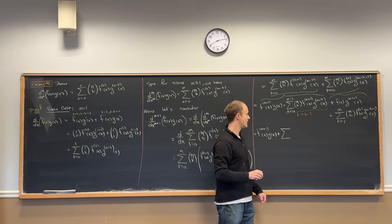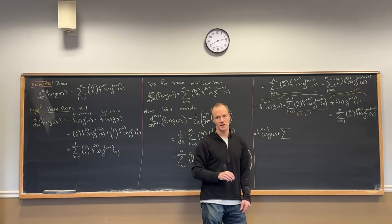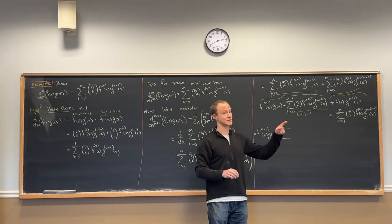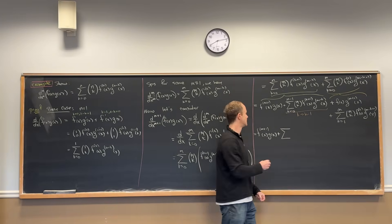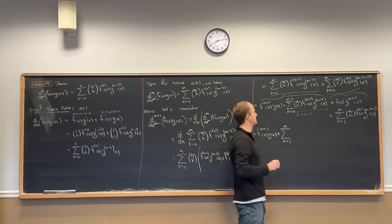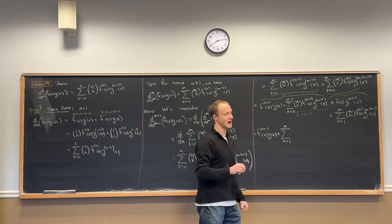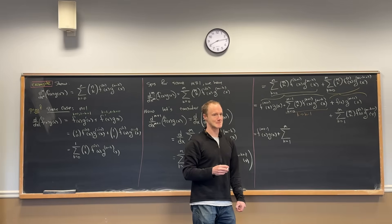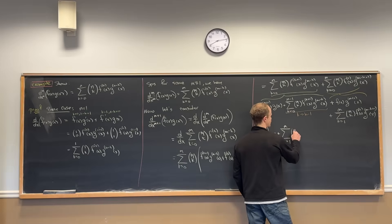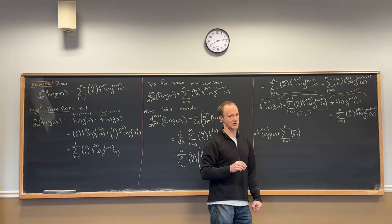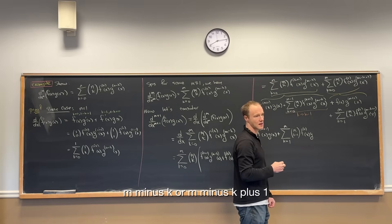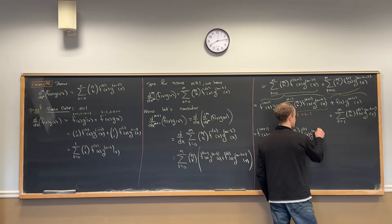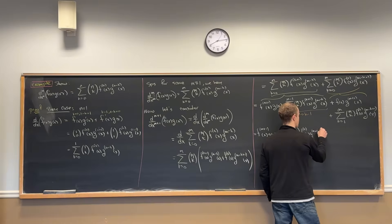Notice that if I replace every k with k minus 1, my starting point is no longer 0 — it's when k minus 1 equals 0, so k equals 1. So the sum goes from k equals 1 up to m, because when k minus 1 equals m minus 1, k equals m. The coefficient becomes m choose (k minus 1), and then I have the kth derivative of f, and then — m minus (k minus 1) which I'll write as m plus 1 minus k — derivative of g.